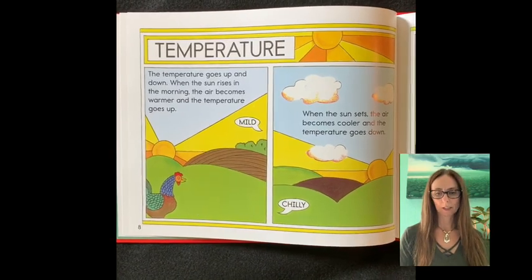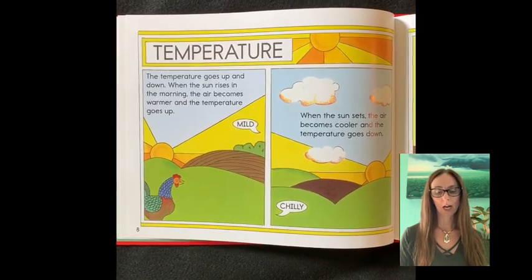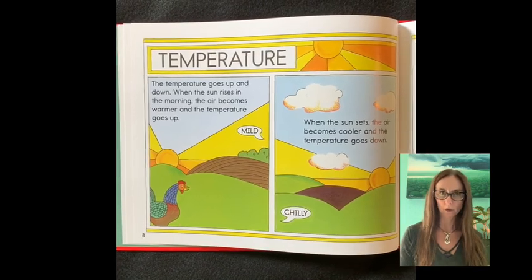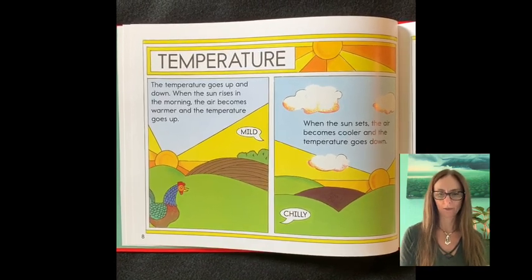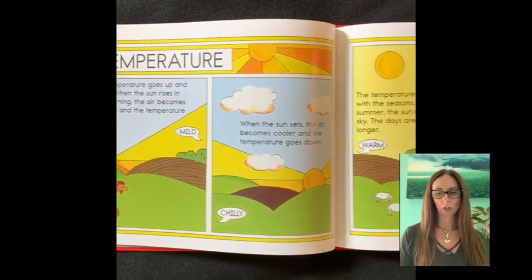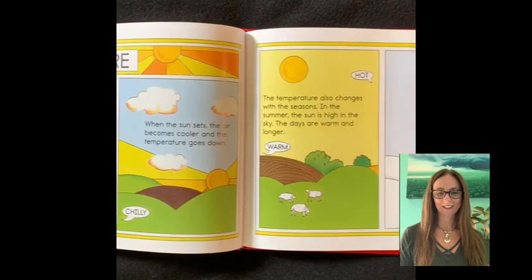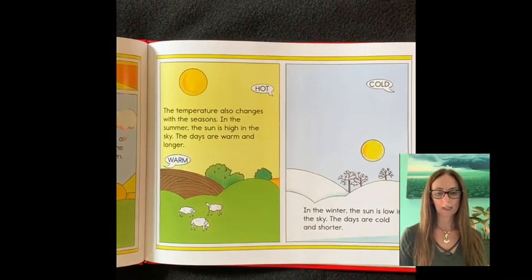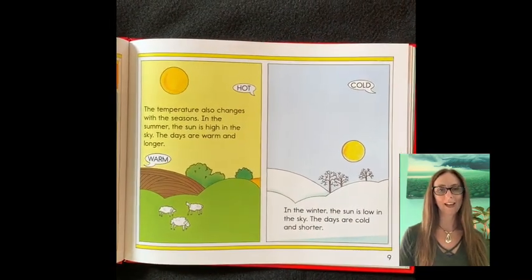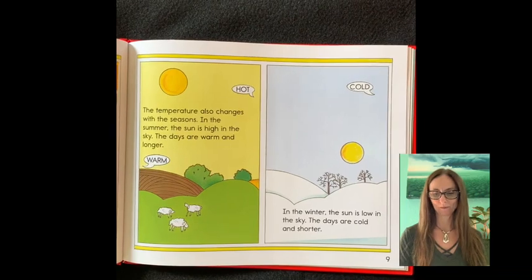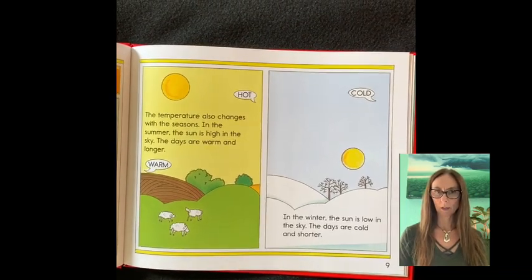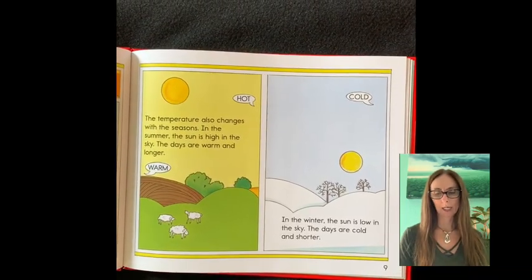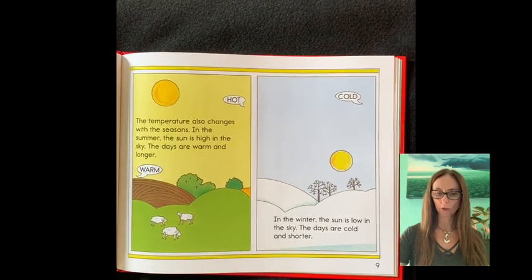Mild. When the sun sets, the air becomes cooler and the temperature goes down. Chilly. The temperature also changes with the seasons. In the summer, the sun is high in the sky. The days are warm and longer. In the winter, the sun is low in the sky. The days are colder and shorter.